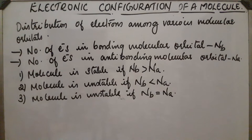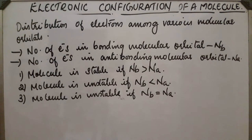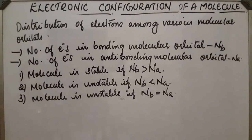If N.B. equals N.A., the atoms will not combine to form a molecule, because the effect of anti-bonding electrons is slightly greater than the effect of electrons present in bonding molecular orbitals. That is why, in the case where N.B. equals N.A., the molecule is unstable.